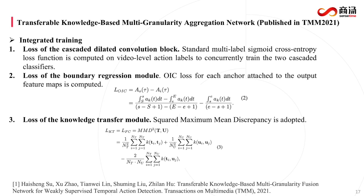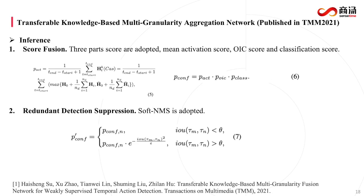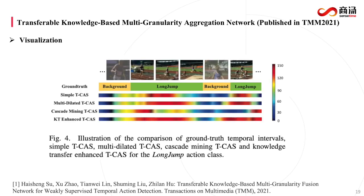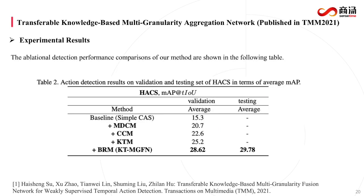The maximum mean discrepancy is utilized to measure the distance of output distributions of two branches. During integrated training, the standard multi-level sigmoid cross-entropy loss is computed on video-level action labels to train two cascade classifiers, and the OIC loss for each anchor is computed respectively. For the knowledge transfer module, squared maximum mean discrepancy is adopted as the loss function. During inference, three-part scores are adopted: mean activation score, OIC score, and classification score, with Soft-NMS for redundant detection suppression. Finally, we achieve 29.78 mean AP on the challenge testing set. Thanks for listening.